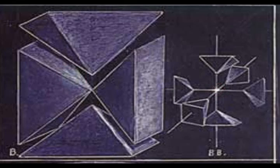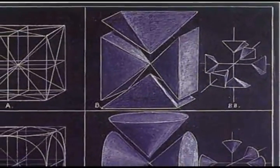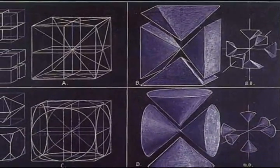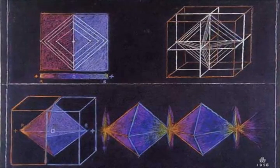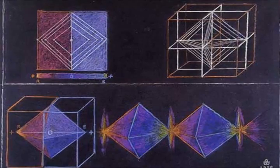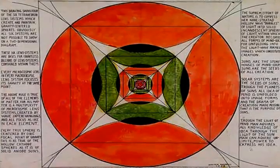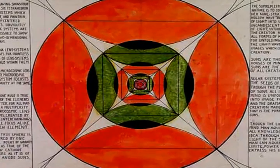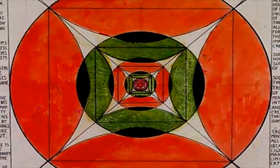Solid spheres can only occur where the six polyhedrons of cubes unite as one — six square pyramids intersecting with their apices pointing to the center of gravity of each cube. These square pyramids are bipyramidal halves of the octahedrons which interpenetrate neighboring cubes of the shared cubic faces. This image illustrates how the six polyhedron lens systems of the cube create and maintain gravity-centered spheres. Every microcosmic lens in every macrocosmic lens system focuses its gravity at the same point.